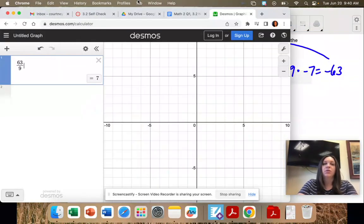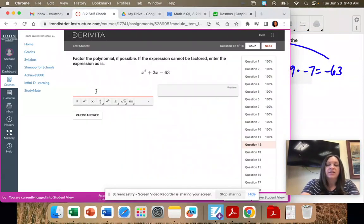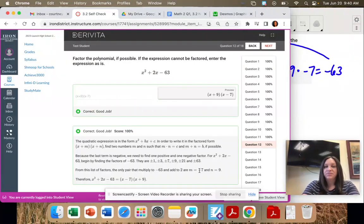So that means our factored form is correct: x plus 9, x minus 7.